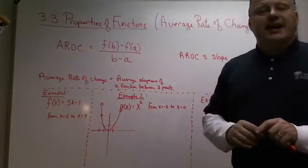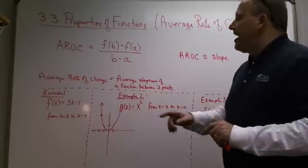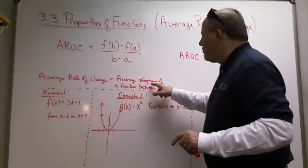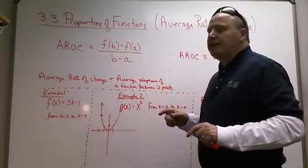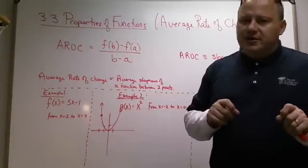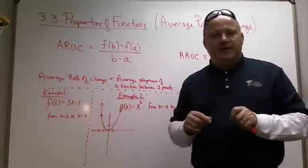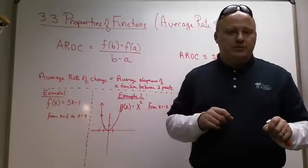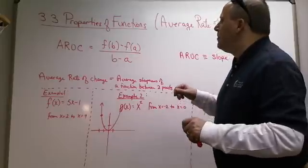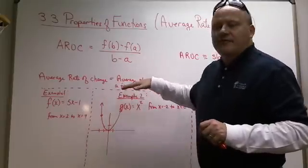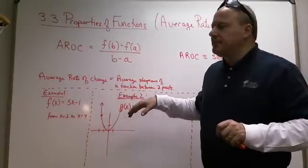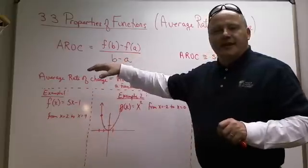So the question is, what is the average rate of change? Well, the average rate of change is the average steepness of a function between two points. And that should look somewhat familiar to you. We talked about how steep a line was. Now we identify that as the word slope. But slope and the average rate of change is only going to be the same when it's a line.